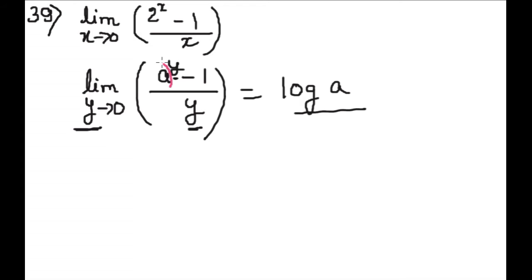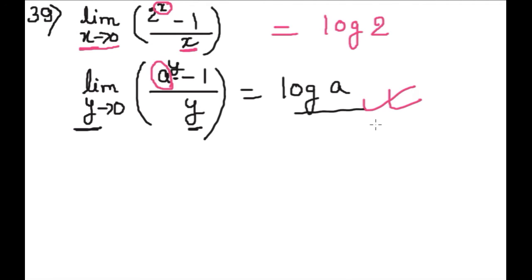यहाँ पे अगर हम देखें, जिसके limit है वही power में भी है और वही यहाँ भी है, तो क्या हम इसे log 2 लिख सकते हैं? As per this formula, using this formula यह log a है, a के जगह पे 2 है, तो हम log 2 इसे लिख सकते हैं। यही हमारा answer है। (The limit variable matches the base and denominator, so the answer is log 2.)